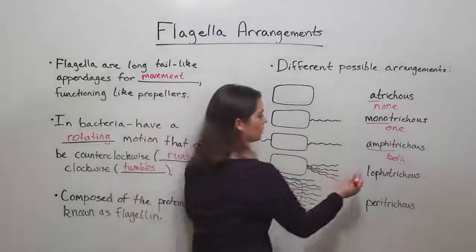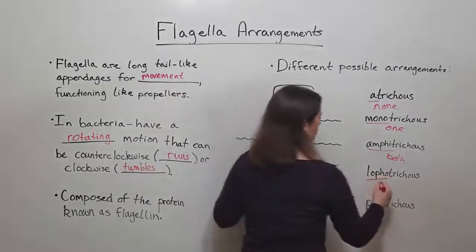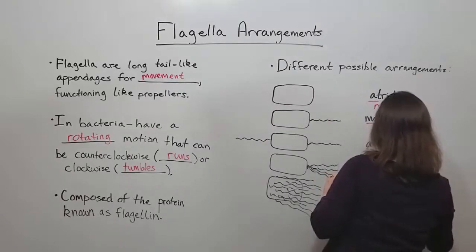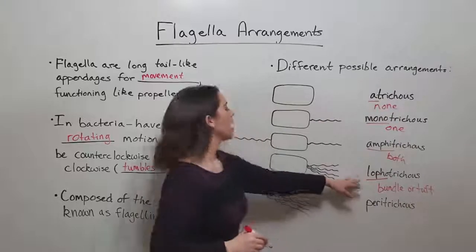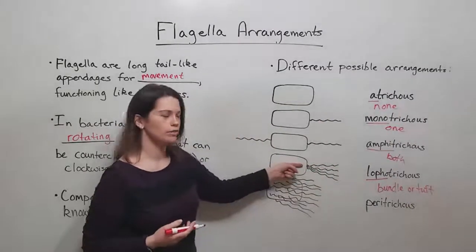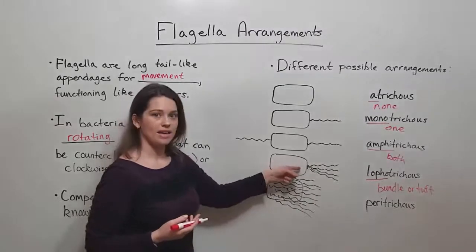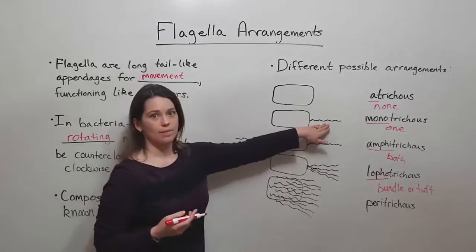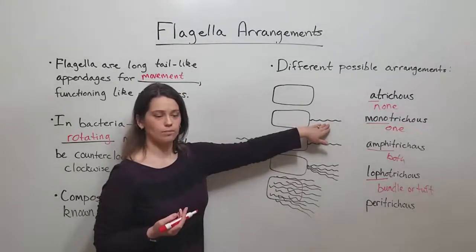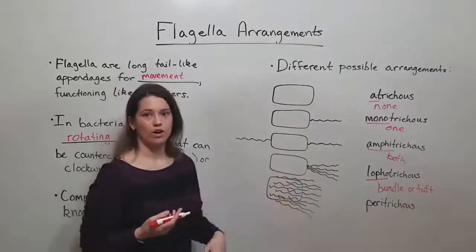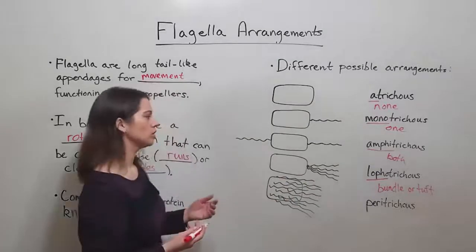There's also lophotrichus, with 'lopho' meaning bundle or tuft. You can see that there is a bundle or tuft of flagella at one end. Now remember, we have one flagellum — it's flagellum ending in U-M for singular. If we have two or more, then we call them flagella. That's the plural terminology.